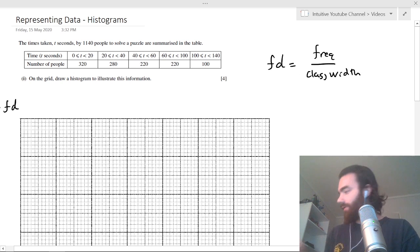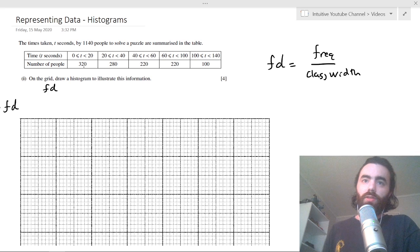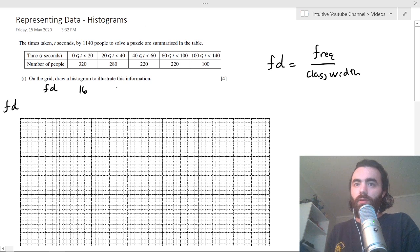So let's find those for this. So for the first one, you can use your calculator. So the frequency density here, we can say frequency density of this first bar is 320, which is the frequency divided by the class width, which is 20, right? 0 to 20, so it's 20. So the first frequency density is 16. The next one will be 280 divided by the class width, which is, again, 20. So that's 14. This one will be 220, again, divided by 20, which is 11.